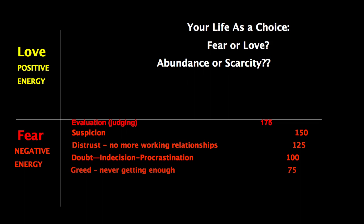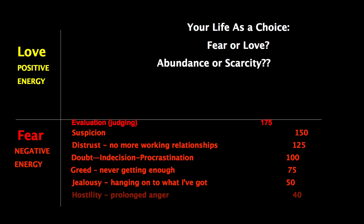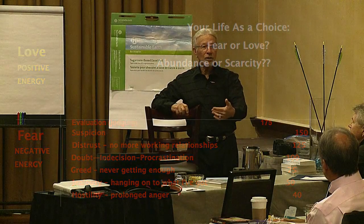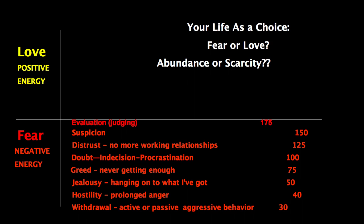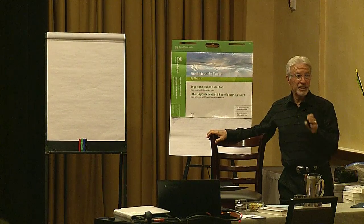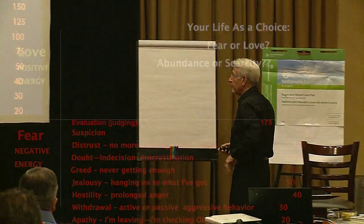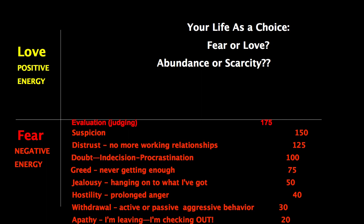That leads to greed — I need to get more from you — at energy level 75. Which leads to jealousy, hanging on to what you've got, which leads to hostility — prolonged anger. It's one thing to get angry; it's another to be around somebody with prolonged anger who just can't get over it. Which leads to withdrawal — either they leave, or passive-aggressive behavior where they stay and make life difficult. When energy gets that low, there's absolutely no hope.